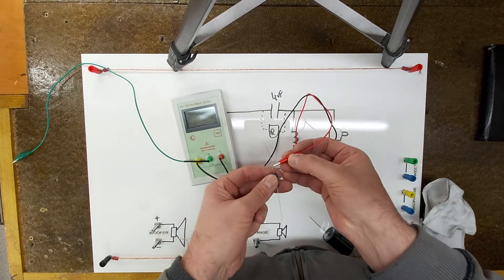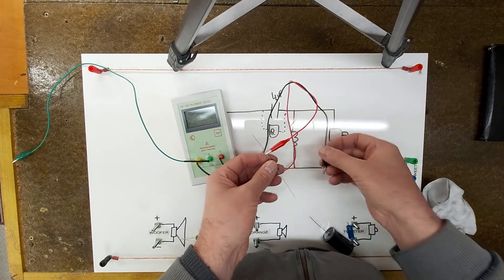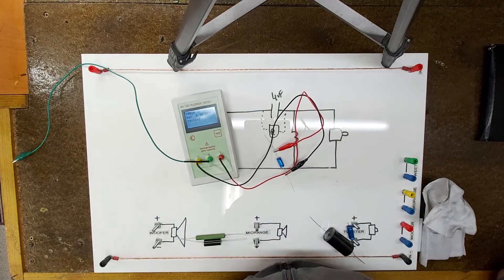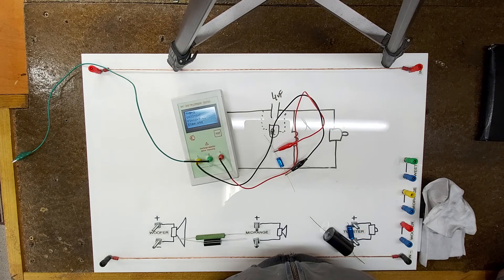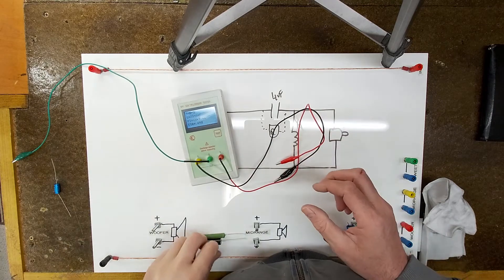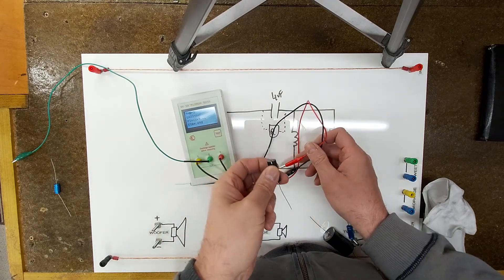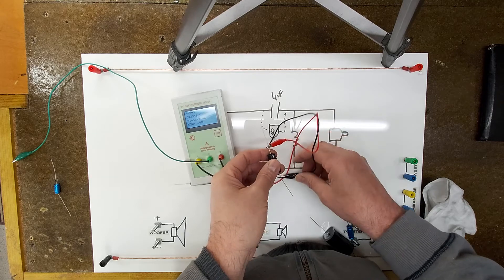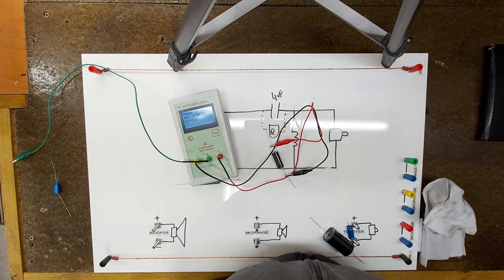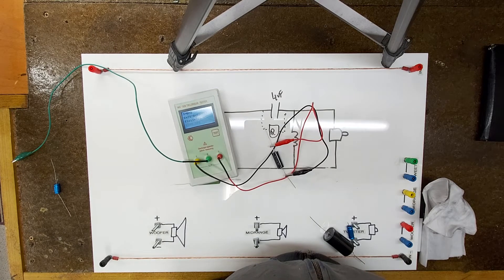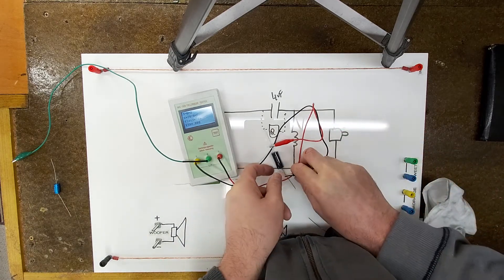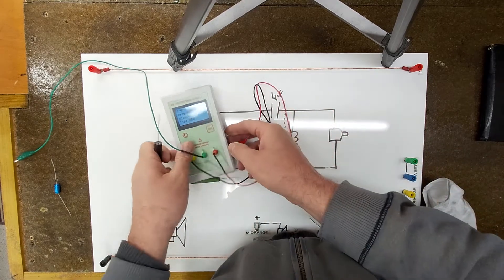So if we look at two capacitors here, these are 2.1 microfarad. If we test this one, its equivalent series resistance is 0.69 ohms. And if we look at the same value polypropylene, we get 0.00. There's no such thing as a superconductor, so let's call it 0.01. So there's a massive difference there.